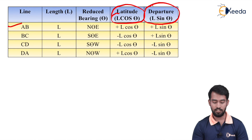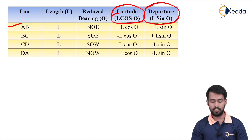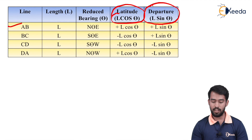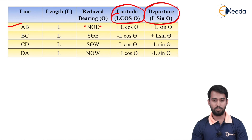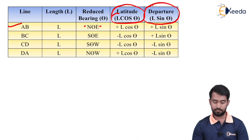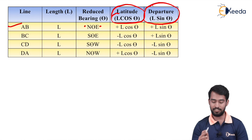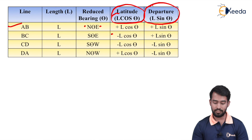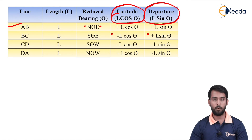For example, for line AB, length is L and the reduced bearing is north-east. North represents latitude, so latitude formula is L cos θ. Because of north, latitude will be positive. And the departure is east, so departure is also positive. For the next line BC, the reduced bearing is south-east. Since south means negative, latitude will be negative. East means departure will be positive.